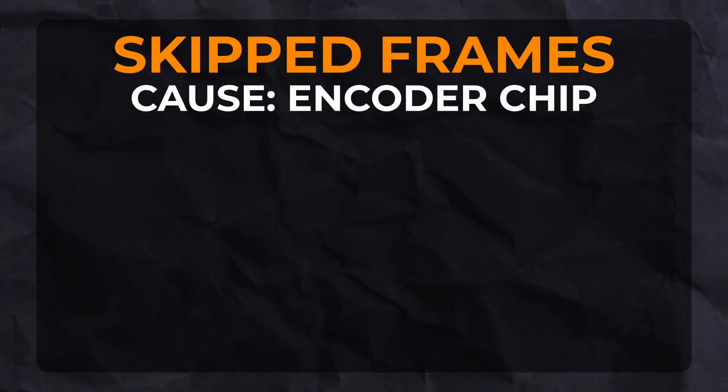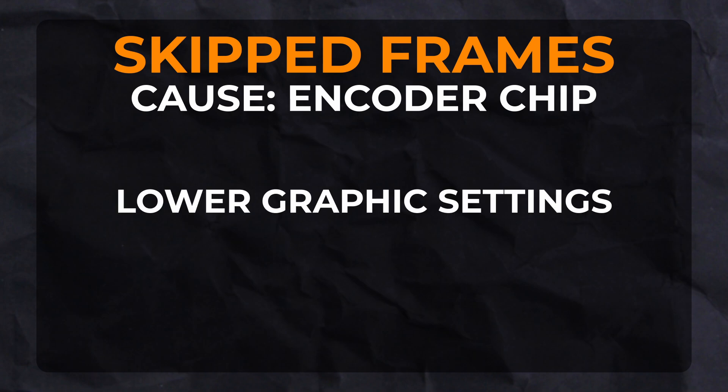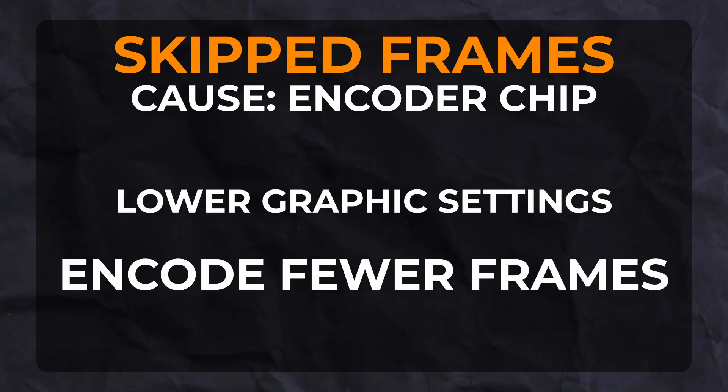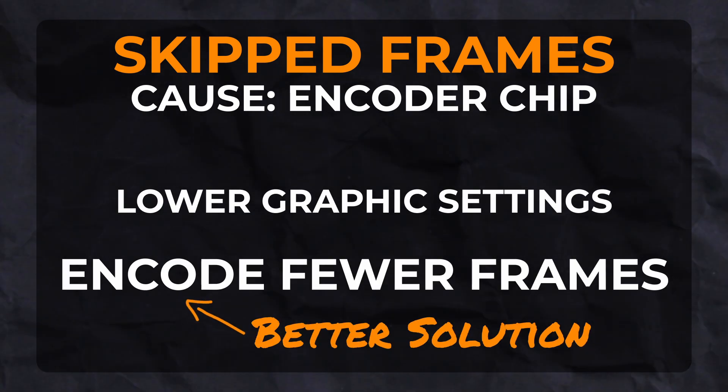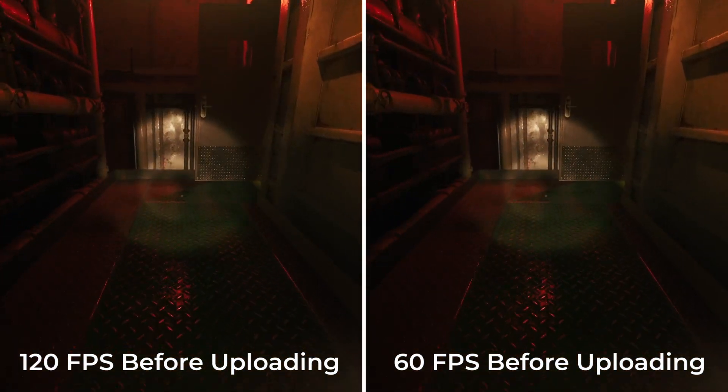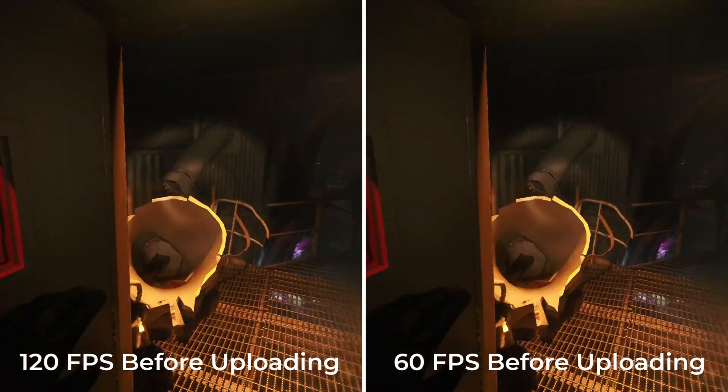Skipped frames are frames that your graphics card skipped because the encoder chip was overloaded. This happens because the game is putting too much strain on it, or because you are trying to encode too many frames. Limiting your game from 144 or 120 frames per second to 60 frames per second will make the game look no worse to your viewers, but will halve or more the number of frames that need to be rendered.